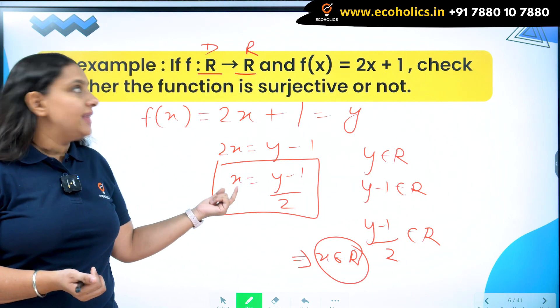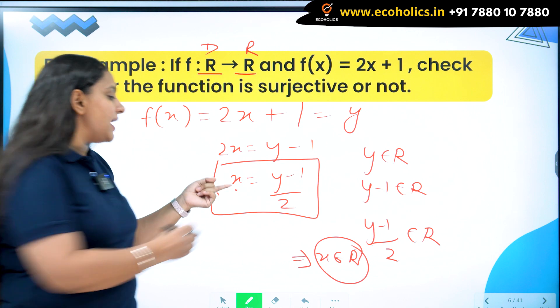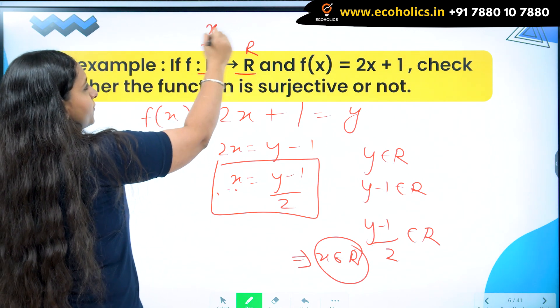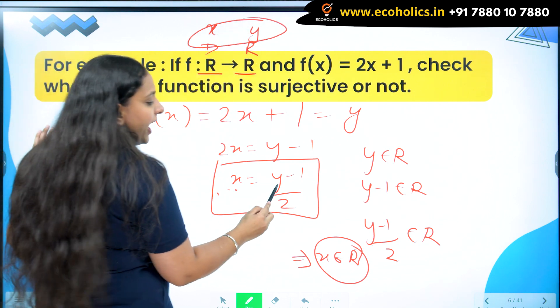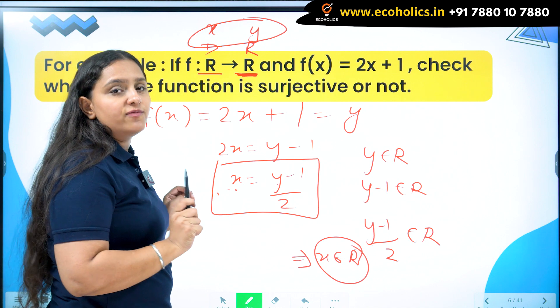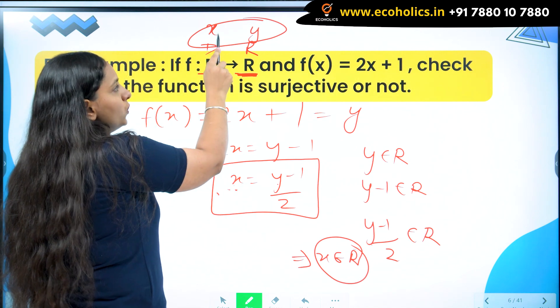What we have to show here is that whatever values y can take, the respective values which x is going to take should lie in the domain because x comes from here and y comes from here. If y is taking values from this set, I should not have some value of x which does not lie here.